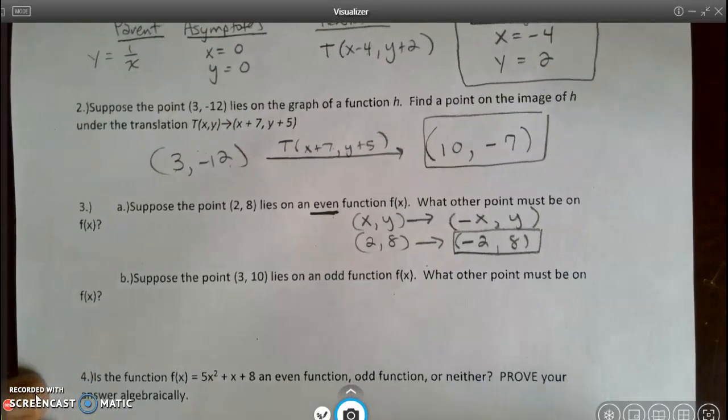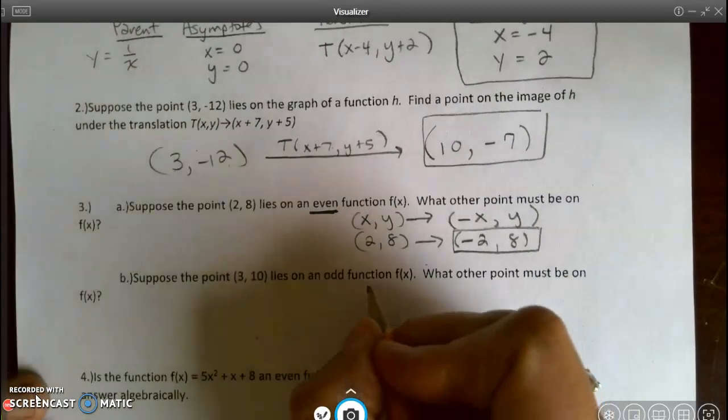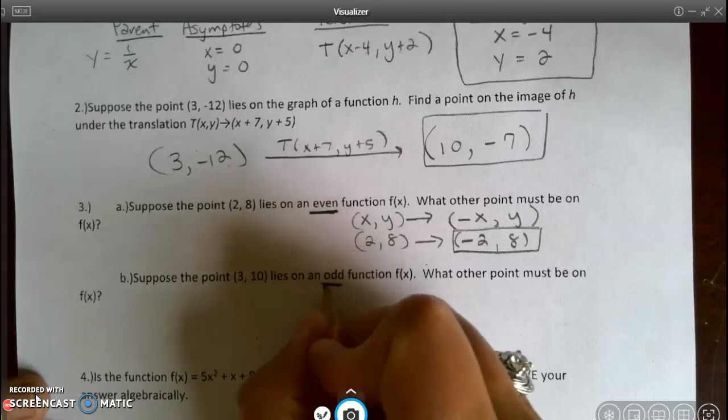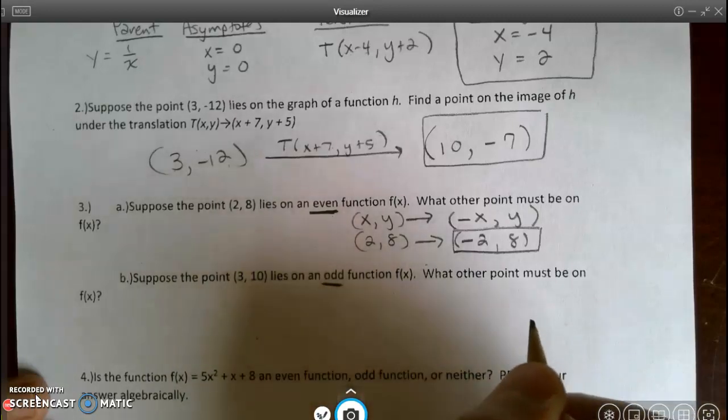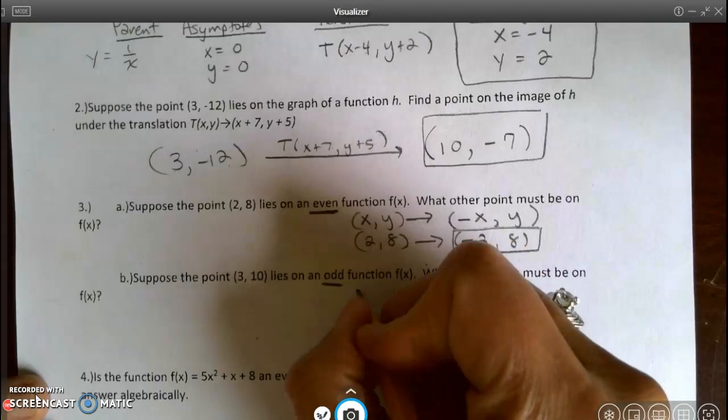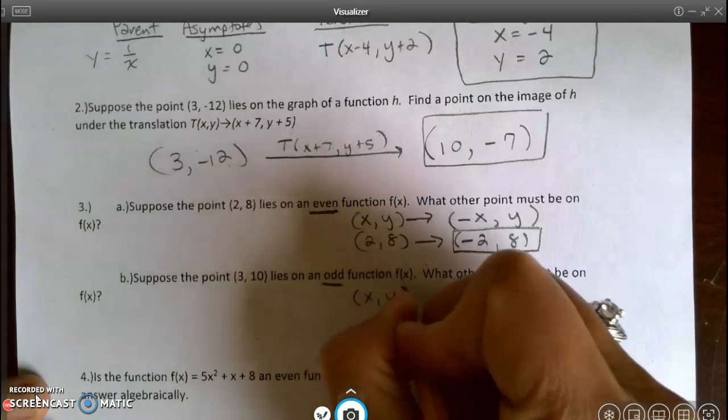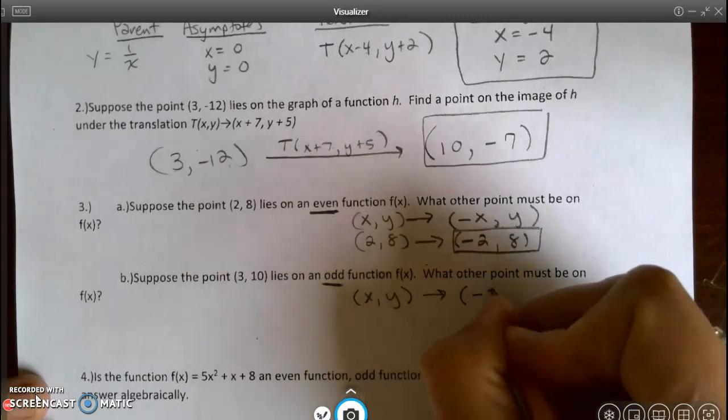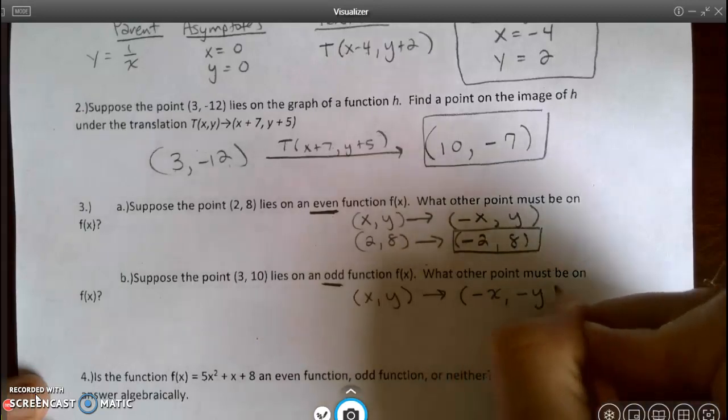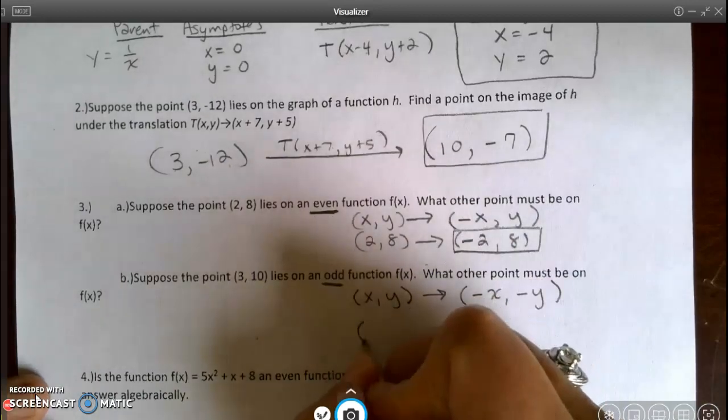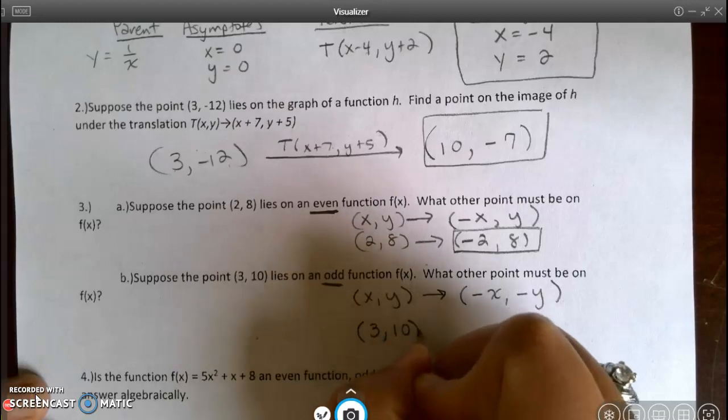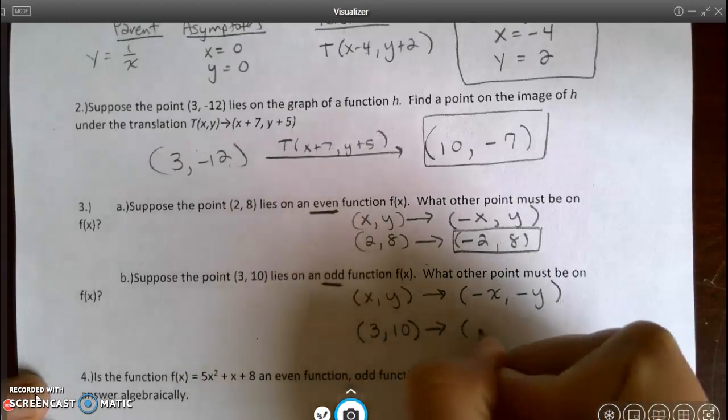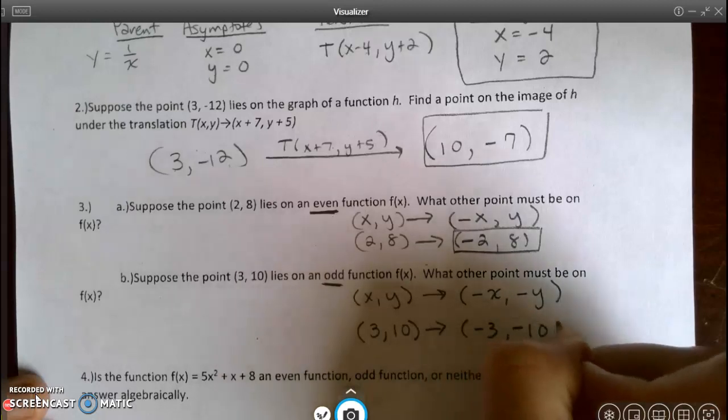Now for part b, it says suppose the point (3, 10) lies on an odd function. What other point must be on f(x)? The odd functions, when I rotate them around the origin, become opposite of x, opposite of y. Which means (3, 10) is going to become the opposite of 3, the opposite of 10, so (-3, -10).